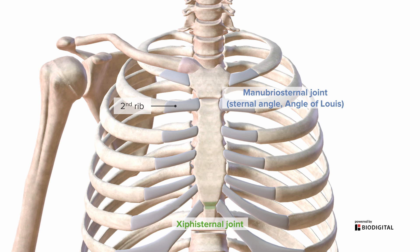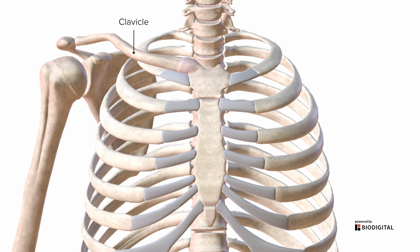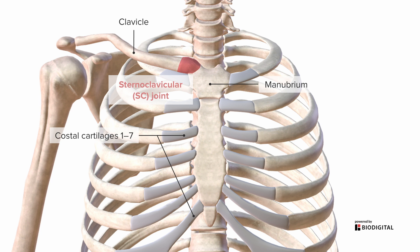The sternum also interacts with other bones, including the clavicle, which joins the manubrium at the sternoclavicular or SC joint. The costal cartilages — the cartilaginous ends of the first seven ribs — attach to the sternum at the sternocostal or sternocondral joints. Costal refers to the rib, and chondral refers to the cartilaginous portion of the rib.